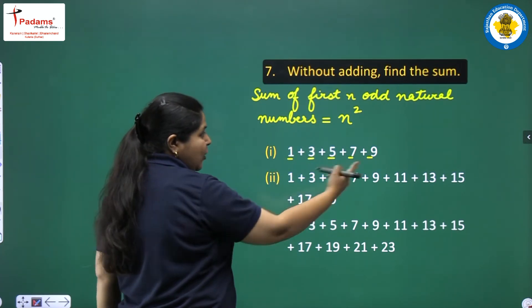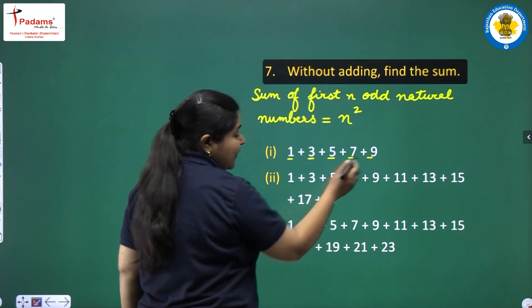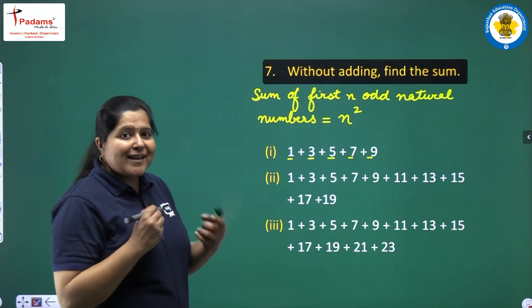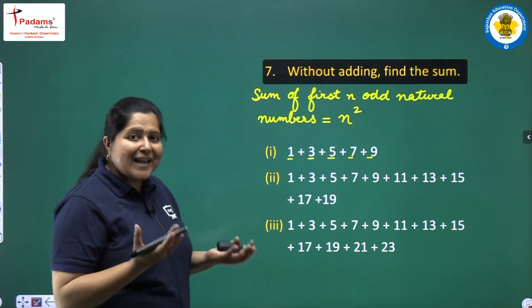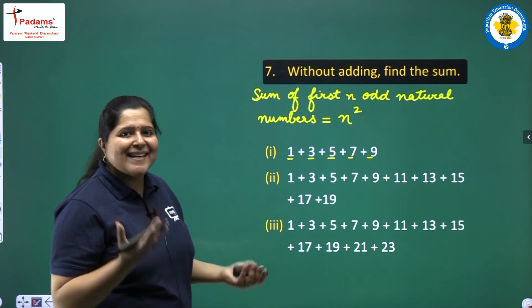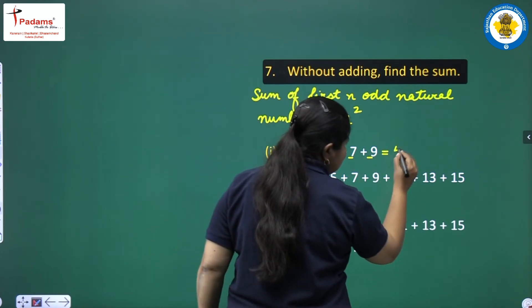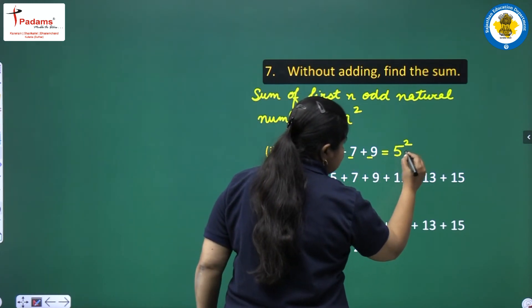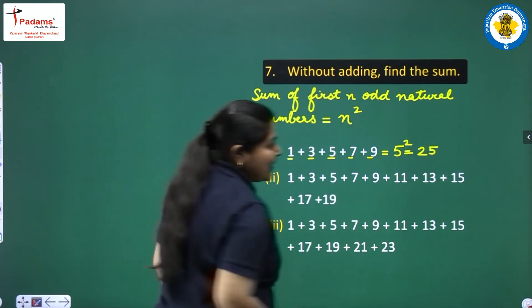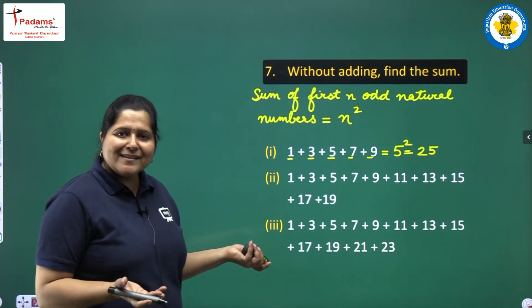Count how many odd numbers there are: 1, 2, 3, 4, 5 — there are 5 odd numbers. So their sum should equal 5 squared. And 5 squared is equal to 25. That is the simple answer for the first part.